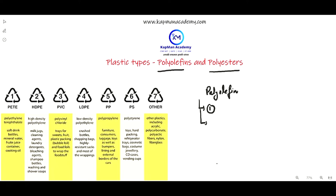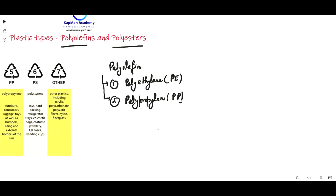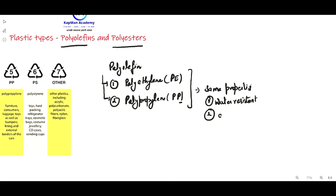The first category is polyethylene, also known as PE, and the second category is polypropylene, also known as PP. Both types of polyolefins basically have the same properties — they are water resistant, malleable, and durable.